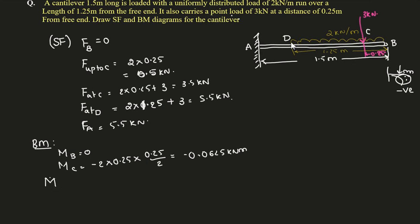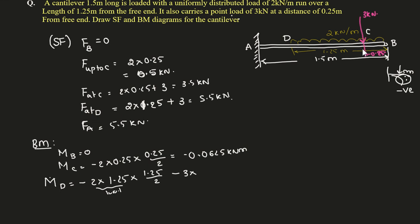Bending moment at D: two types of loads act — the UDL and the point load. For the UDL: −2 × 1.25 × (1.25/2). For the point load: −3 × 1 (distance from the point load to D is 1.5 − 0.25 − 0.25 = 1 meter). So M_D = −(2 × 1.25 × 0.625) − (3 × 1) = −4.563 kN·m.